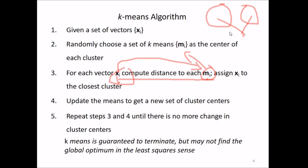We update the means to get a new set of cluster centers. The mean changes every time, but eventually converges. We repeat these steps until there is no more change in the cluster centers. K-means is guaranteed to terminate, but there is a problem - we may not find the global optimum, only a local maximum sometimes.